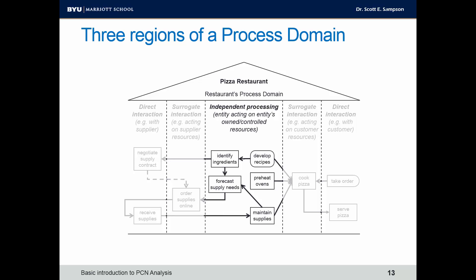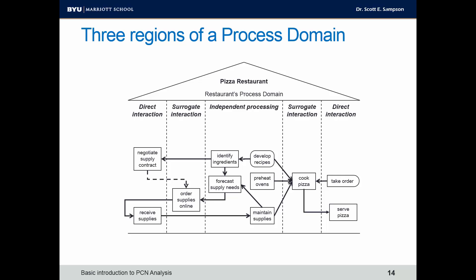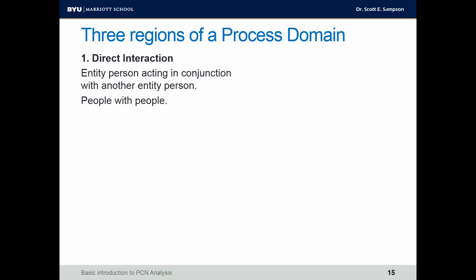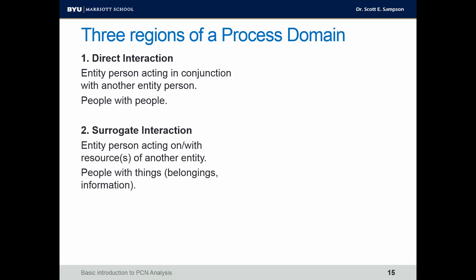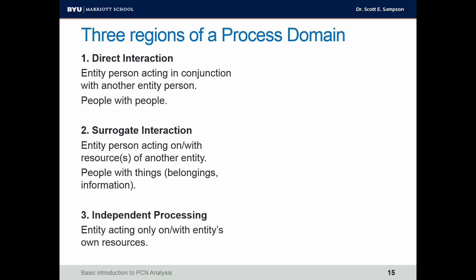In the middle, we have the region of independent processing — steps acting on resources owned and controlled by the entity whose process domain this is. The triangle shape at the top of a process domain helps us think about process control. Steps in the region of independent processing give the entity a great deal of control, whereas moving to regions of surrogate and direct interaction requires the entity to cede control to other entities. In summary: direct interaction is person-to-person interaction; surrogate interaction is an entity acting on a resource of another entity, not person-to-person; and independent processing is an entity acting on their own resources that they own and control.